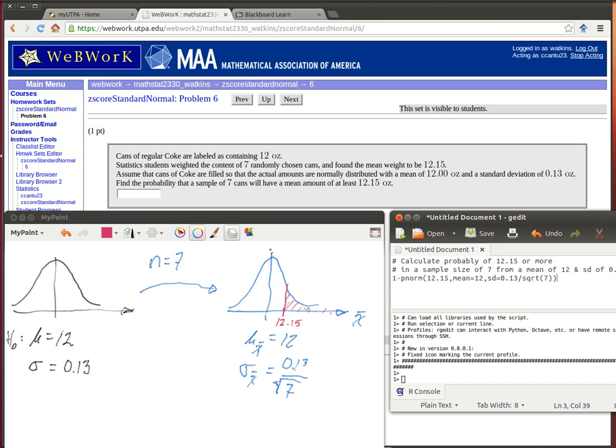So all of a sudden we know a whole lot about this distribution because of the assumptions that we made over here. There were two assumptions. One was that the null hypothesis that the mean of the amount in all the cans was 12 ounces and that this was normally distributed.